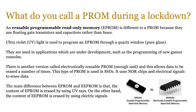An erasable programmable read-only memory (EPROM) is very different to a PROM chip because it uses floating gate transistors and capacitors rather than fuses. UV light — ultraviolet light — is used to program an EPROM chip, and you normally do that through a quartz window made of pure glass, which you can just about see in the image on screen. These are used in applications under development, such as programming of new game consoles, where you want a prototype that people can use to test things and check memory allocation.